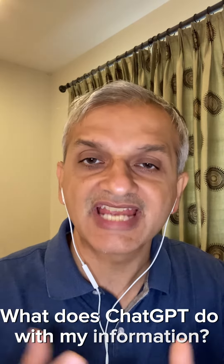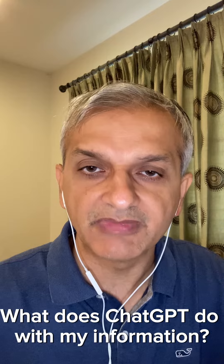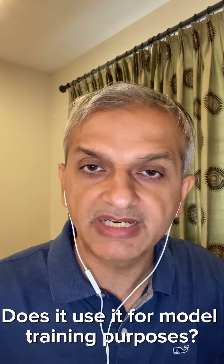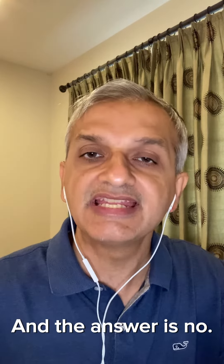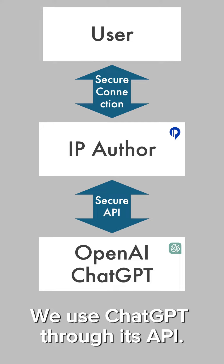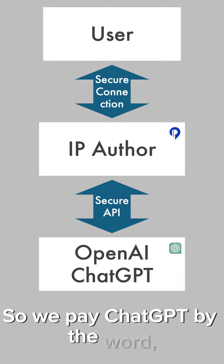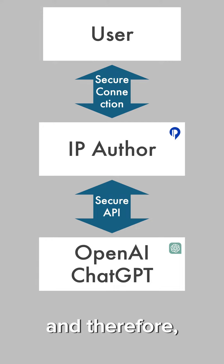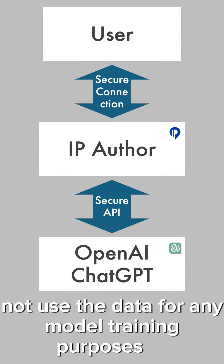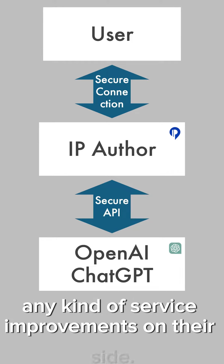The first question is: what does ChatGPT do with my information? Does it use it for model training purposes? The answer is no. We use ChatGPT through its API, so we pay ChatGPT by word, and therefore they make the commitment that they will not use the data for any model training purposes or any kind of service improvements on their side.